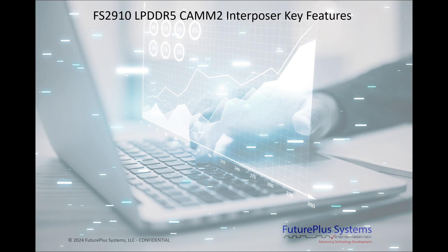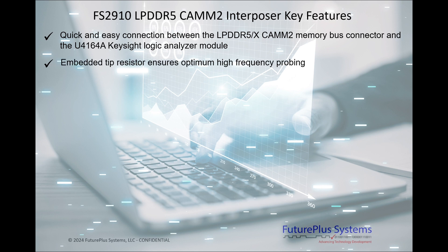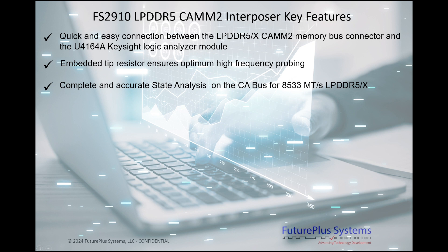The FS-2910 is designed to work with the Keysight U4164 logic analyzer. The interposer plugs directly into the logic analyzer for very quick and easy connection. The interposer also has embedded tip resistors for optimum high frequency probing. The system yields complete and accurate state analysis on the CA bus up to the maximum LPDDR5 CAM2 speed of 8,533 megatransfers per second.